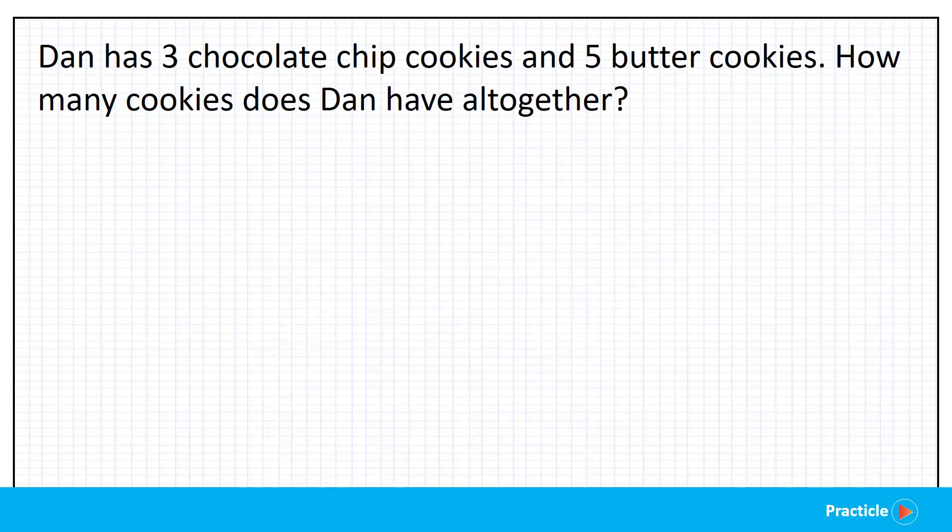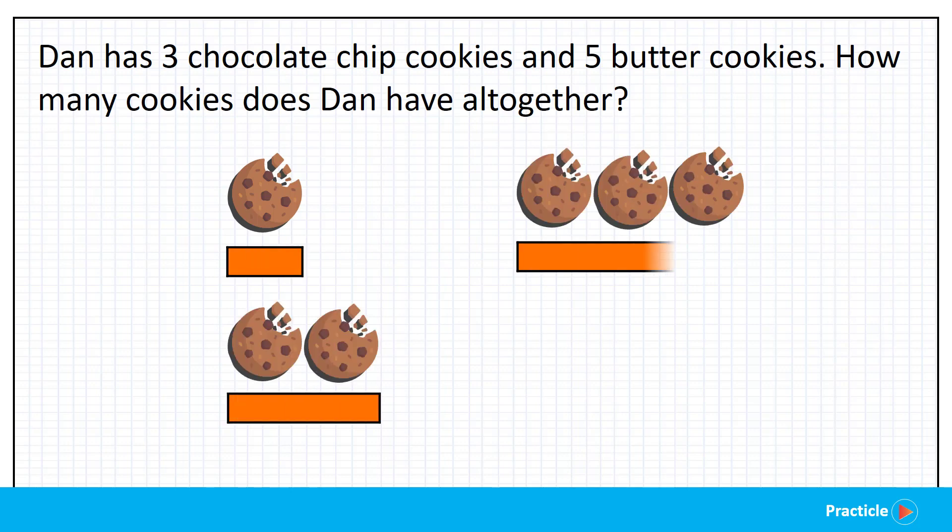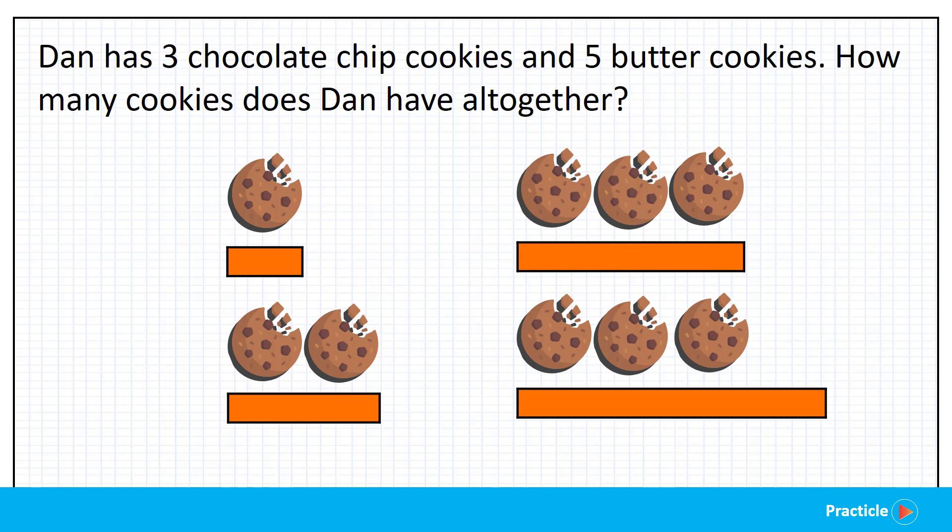Let's see how to draw the model. Remember what we said earlier on about models? Models are just rectangular bars which show different amount of things. So the more things we have, the longer our bar model will be. And the fewer things we have, the shorter the bar model will be.